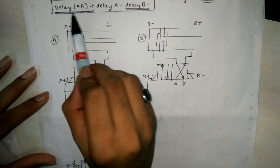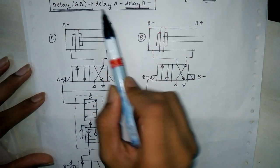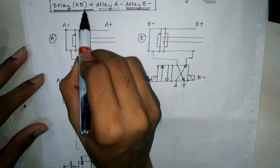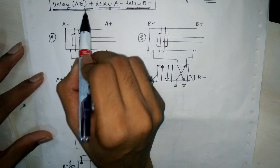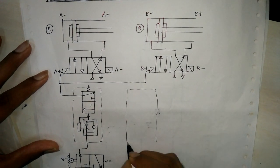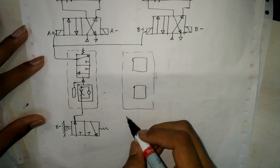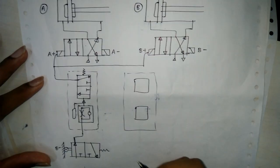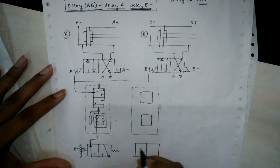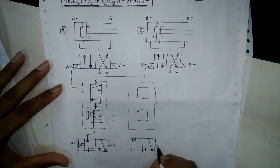The next term is delay AB, which is over. Then delay A-: the previous term is delay AB, so the key will be of delay AB. We draw the same delay symbol — two boxes — and A+ sorry, AB+. The same 3/2 valve having a spring.